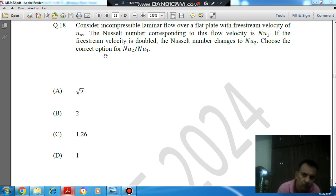Choose the correct option for NU2/NU1. Option A: √2, option B: 2, option C: 1.26, and option D: 1.